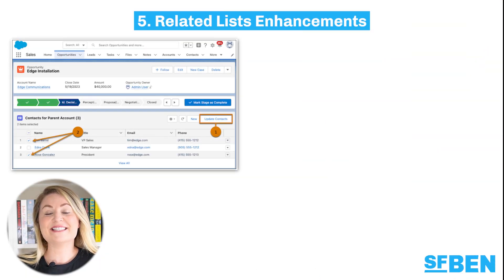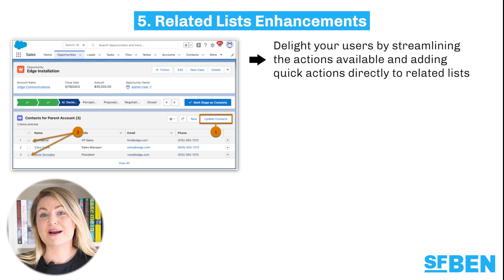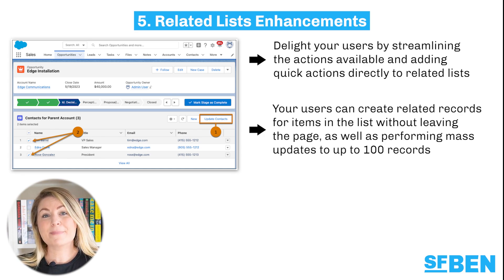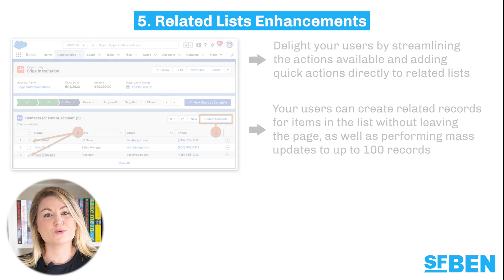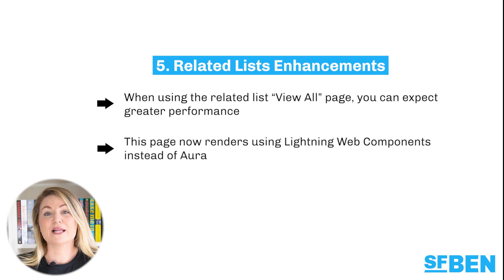Supercharge your related list and delight your users by streamlining the actions available and adding quick actions directly to related lists. These changes mean that your users can create related records for items in the list without leaving the page, as well as performing mass updates to up to 100 records. When using the related list view all page you can also expect greater performance, as this page now renders using Lightning Web Components instead of Aura.